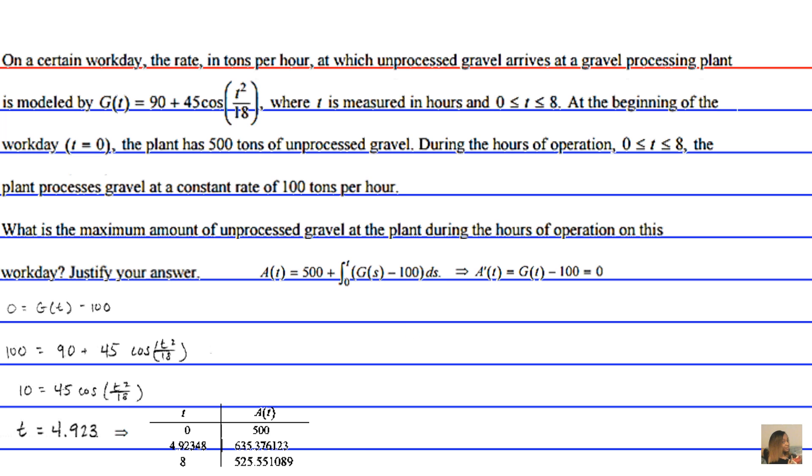Therefore, we can say that the maximum accumulation occurs at t = 4.92348 seconds, but that's not our answer. The maximum amount, our accumulated amount, is going to be 635.376123 tons.